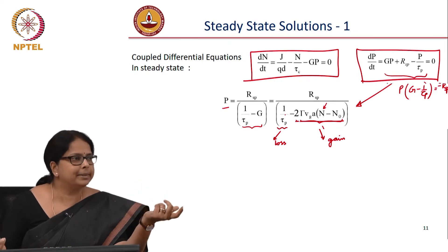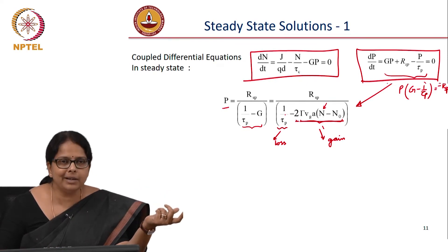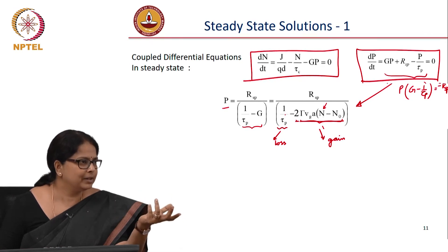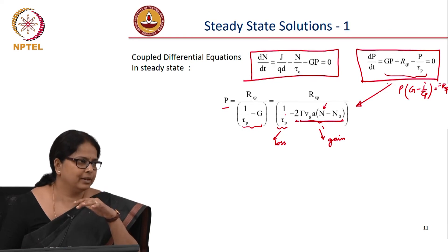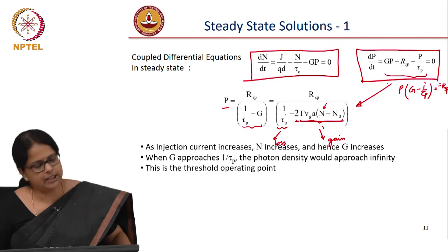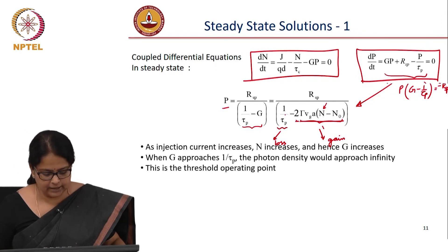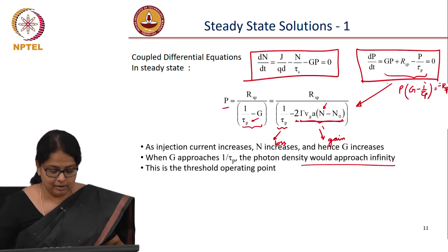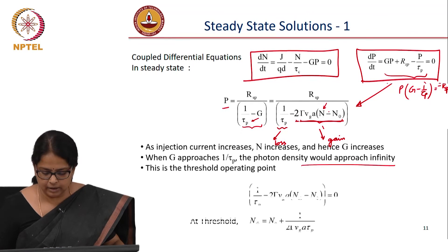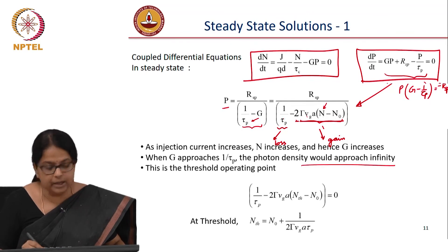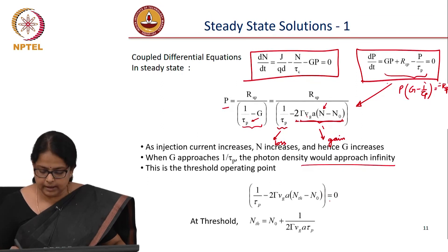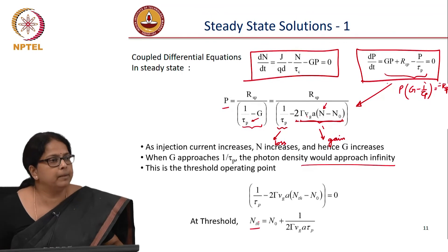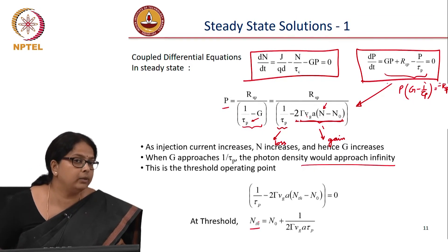So this term is actually representing the loss in the system and this term is actually representing the gain in the system. Now, if this becomes exactly equal, what happens? Will I get infinite photon number? No, that is not realistically possible. So that is your condition for threshold, right? So as injection current increases, your N increases, so your G increases. When G approaches this number, photon density would approach infinity. It is not that you are going to get infinity. So that is your threshold operating point. So at threshold, we can find out this term at threshold, these two terms are equal. So this number is equal to 0. So I can actually calculate what is the population inversion required or photon density required to achieve threshold condition. That must be equal to, I have just put this as equal to 0. You rewrite this equation, you will get Nth is equal to N naught plus this number. We have found out what is the threshold now.